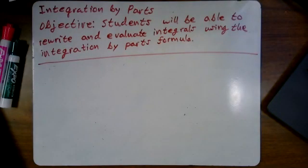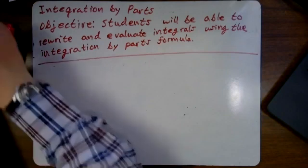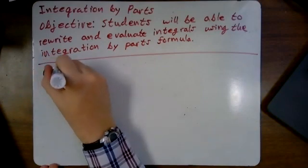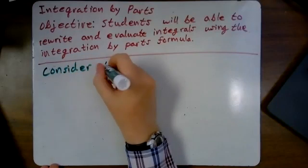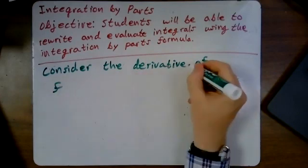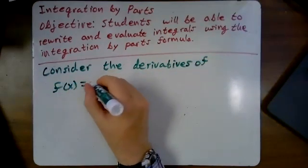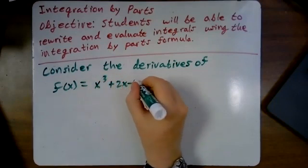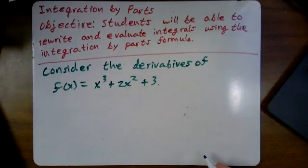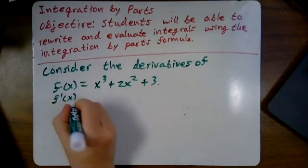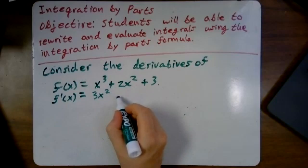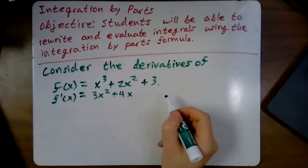Okay, now, let's consider the derivative. Let's say f of x equals x cubed plus 2x squared plus 2x. So what's the first derivative? 3x squared plus 4x. And the constant term goes to 0.